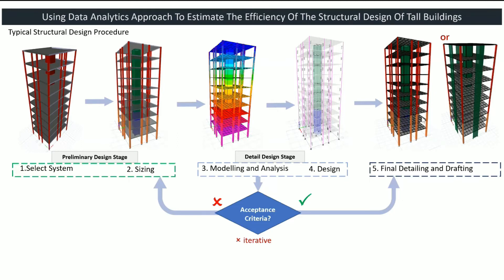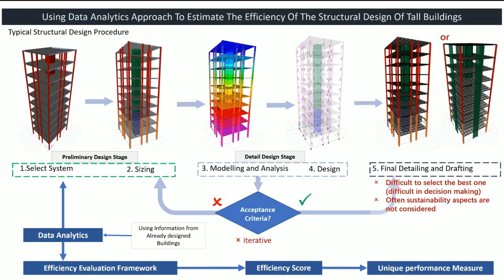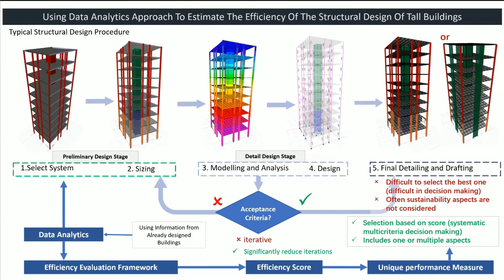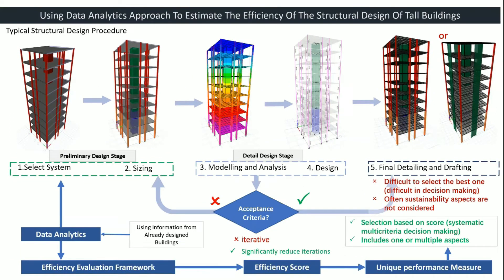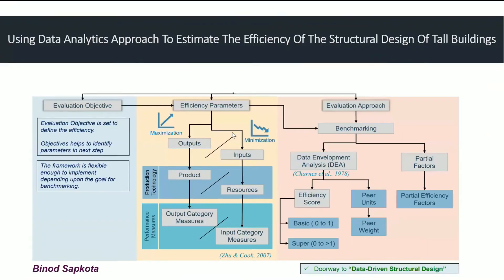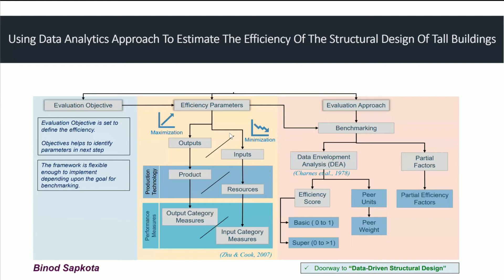That's what we tried to do through a thesis, which was quite well done by a student recently. We developed an efficiency framework that you can use to define and measure the efficiency of a building — system efficiency — and then determine whether the building is going to be structurally efficient or not. Sustainability and other parameters can also be added, since the framework is general. Using the data, we could generate efficiency metrics, evaluate the system, and predict its performance. We applied this first to a simple column section, then expanded it to a frame and then to a full building. This is essentially the doorway to data-driven structural design.